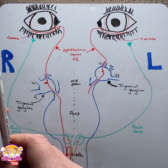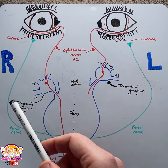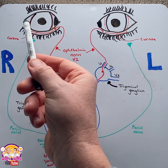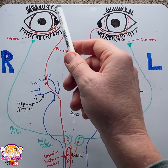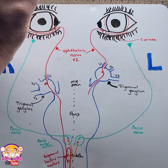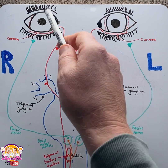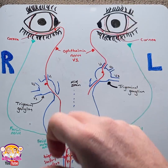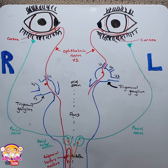When the cornea is stimulated — let's say on the right side by a cotton bud, by saline, or a puff of air — you would expect to see the right eye blink. This is the direct response, but at the same time we also see the left eye blink. This is the consensual response.